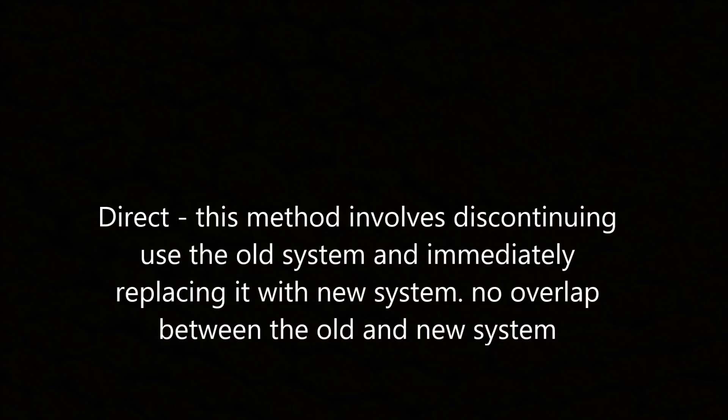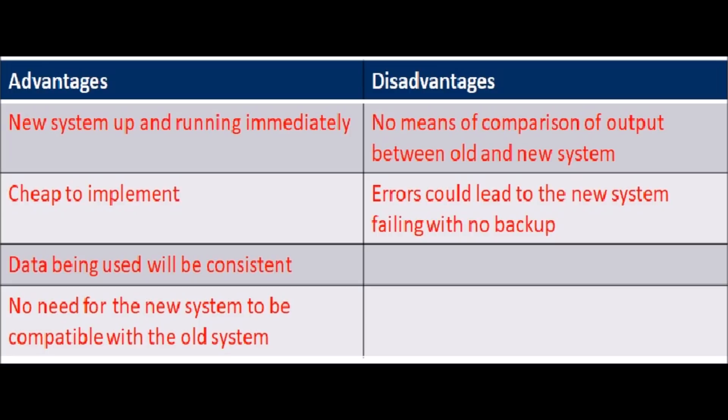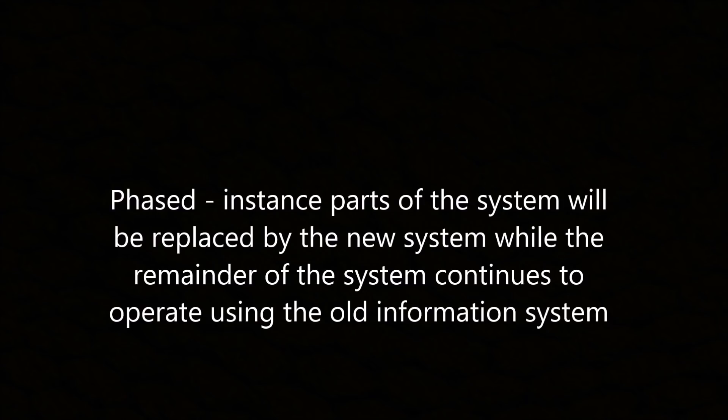Direct implementation is a method that involves discontinuing the old system and immediately replacing it with the new system, with no overlap between the old and the new. Phased implementation is where parts of the system are replaced by the new system while the remainder of the system continues to operate using the old information system.